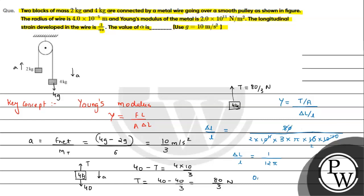On comparing with the given form 1/αn, we can say the value of α is 12. So this is the answer for the question. I hope you understood the solution — all the best!